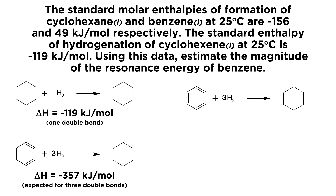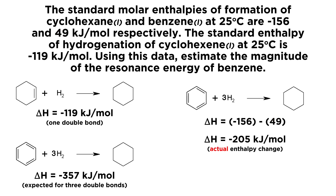In actuality, using the standard molar enthalpies of formation, we do products minus reactants. The enthalpy of formation of cyclohexane is negative 156, and the enthalpy of formation of benzene is 49, so negative 156 minus 49 equals negative 205 kilojoules per mole. This is the actual experimentally determined value for the enthalpy change when benzene is completely hydrogenated to give cyclohexane. Benzene sits at a lower energy than we would expect if we ignored resonance and simply considered three isolated pi bonds, so only 205 kilojoules per mole is released.